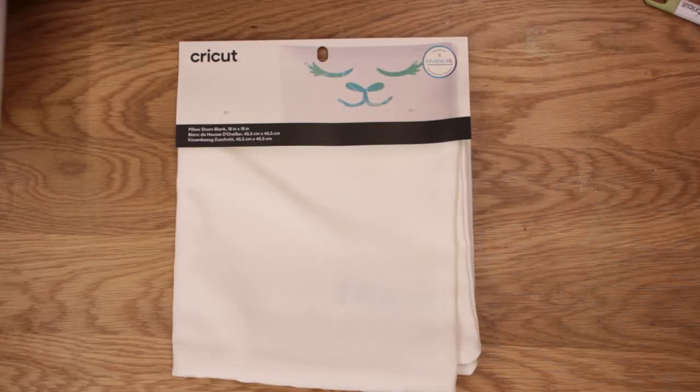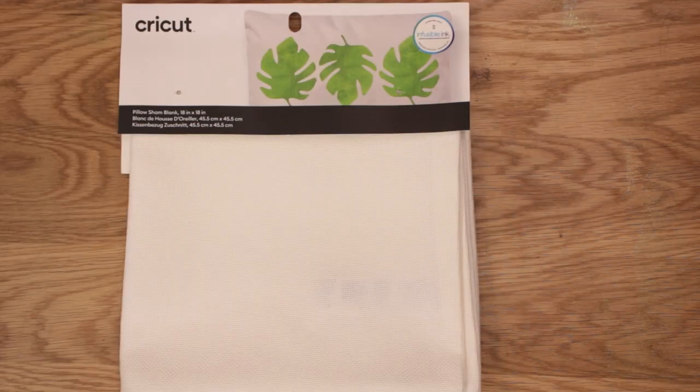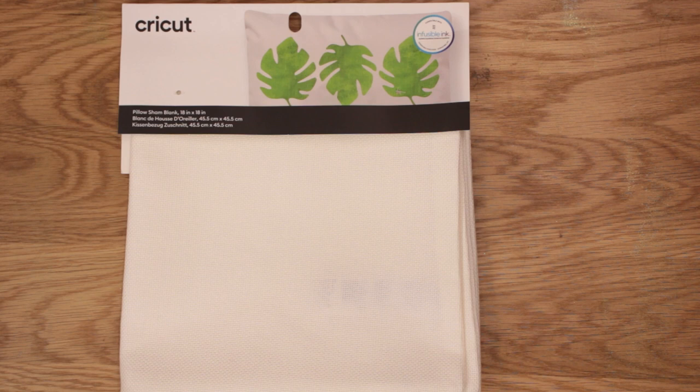We've then got the pillow blanks. So they call them pillow shams, but they are a cushion cover is what they are over here. So you've got this one which is 18 by 18 inches and this is the white version. Again, this is a new infusible ink blank.